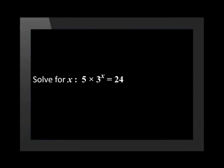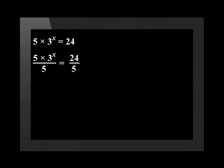Let us look at another example where we have to use a calculator. Solve for x if 5 multiplied by 3 to the power x equals 24. First, we need to isolate 3 to the power x. To do this, we divide both sides by 5. Therefore, 3 to the power x equals 24 divided by 5. Now that 3 to the power x is alone, we can solve for x using the logarithms.